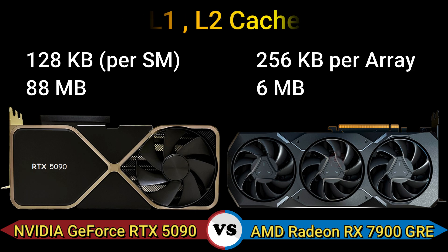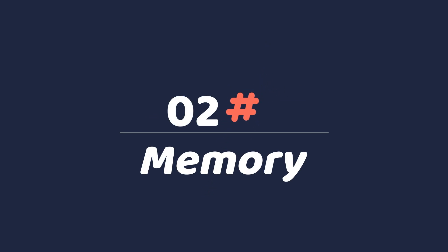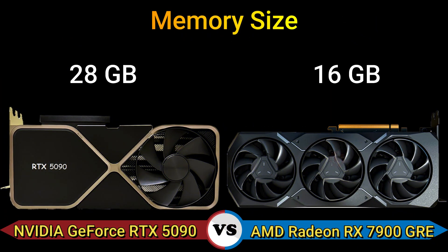L1/L2 cache: 128 KB and 88 MB, and 256 KB and 66 MB. Part 2, memory. Memory size: 28 GB and 16 GB.